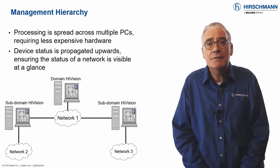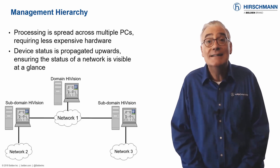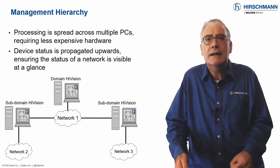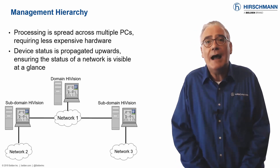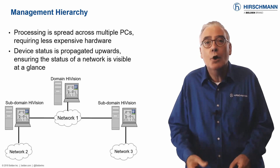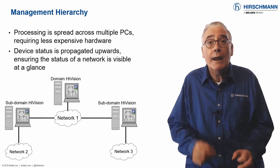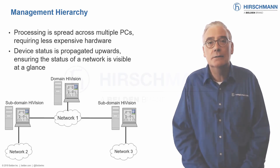Industrial HiVision can use a domain server to supervise the status of subdomain servers, which in turn supervise networks. This provides you with a highly scalable solution. And to make administration even simpler, all licenses can be held on the domain server and leased to the subdomain servers.